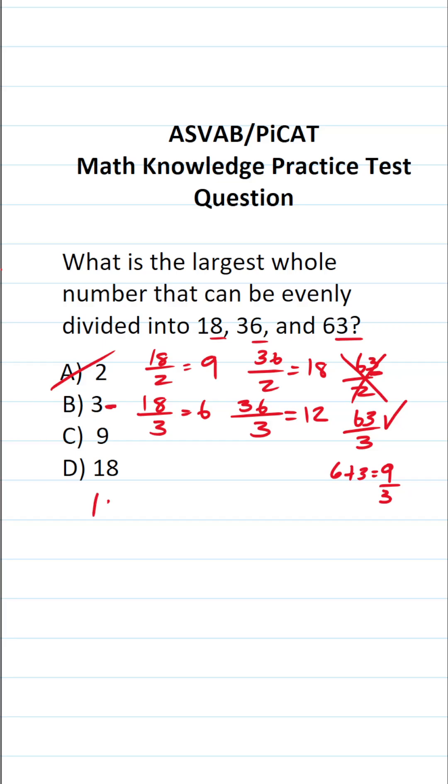What about 9? 18 divided by 9 is 2. 36 divided by 9 is 4. 63 divided by 9 is 7. So again, so far, the correct answer is C, 9. 18, 36, and 63 are all divisible by 9.